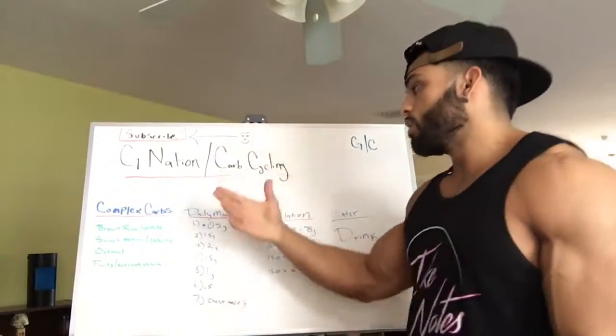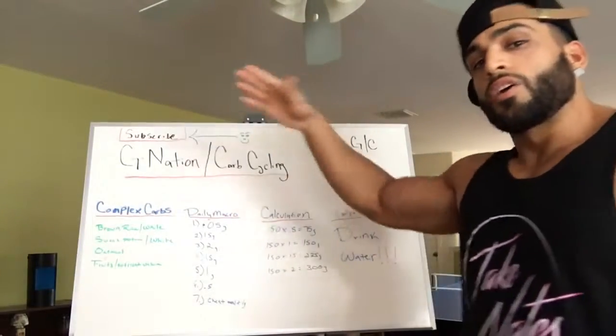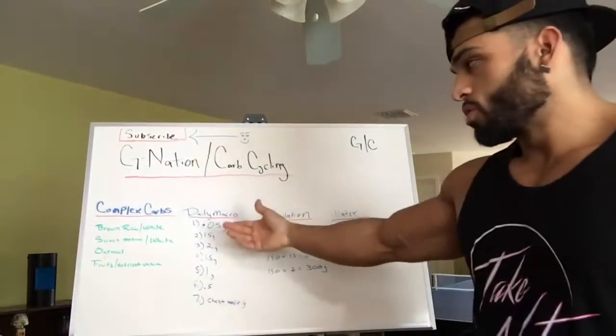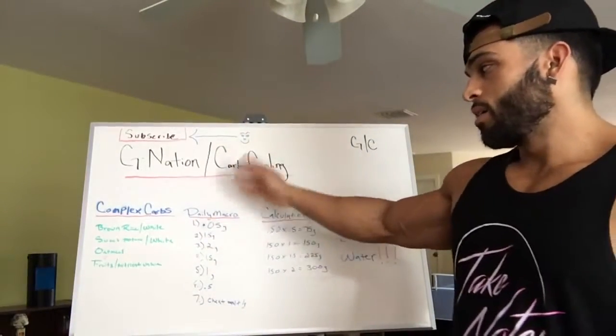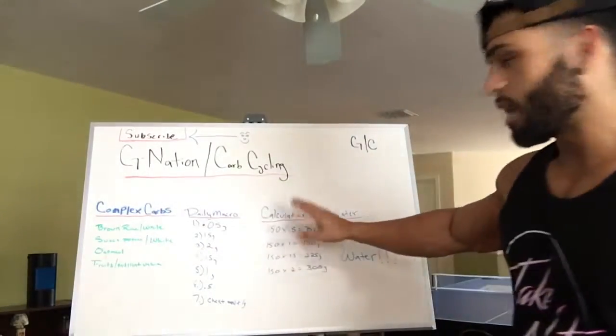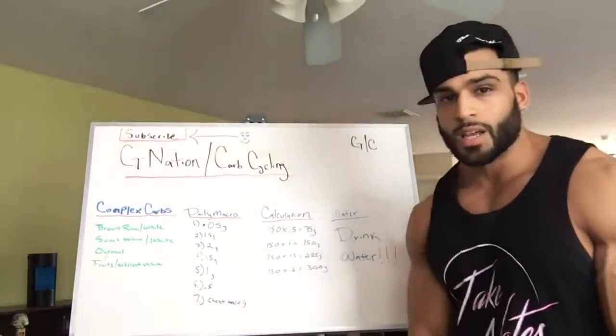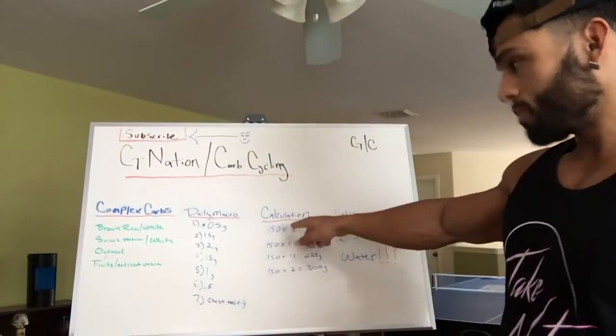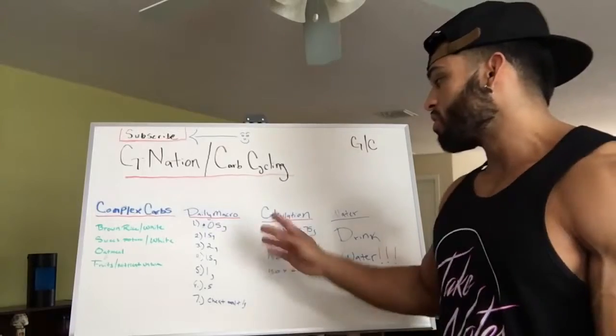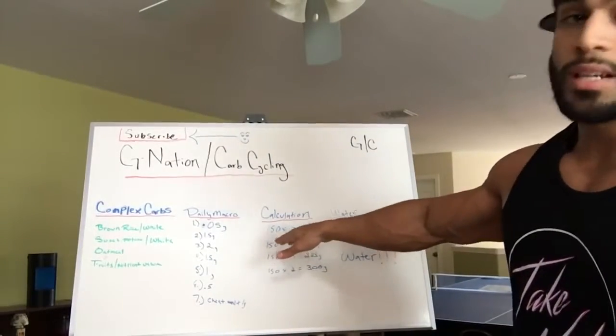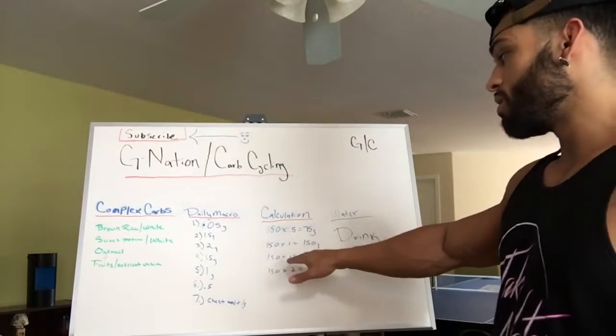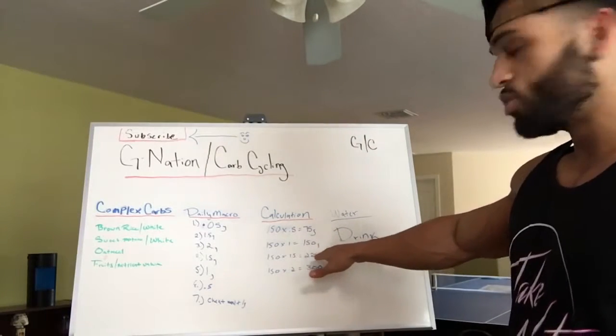So here we go, an example of carb cycling. Never do the same thing, you want to keep your body guessing. Here, actually I'll go first with the calculation. We have here the calculations: if you weigh 150 pounds and you consume 0.5 grams of carbs per pound a day, that's 75 grams. 150 pounds and you consume one gram a day, that's 150 grams. 1.5 grams equals 225.